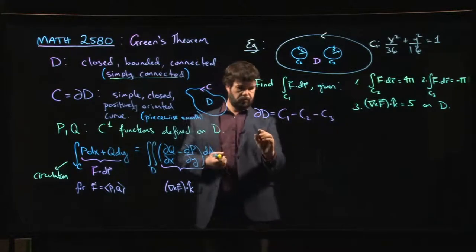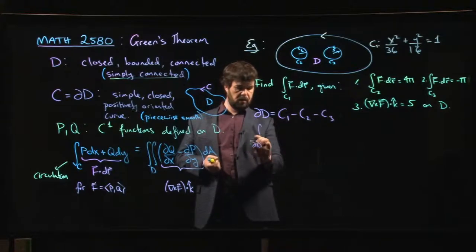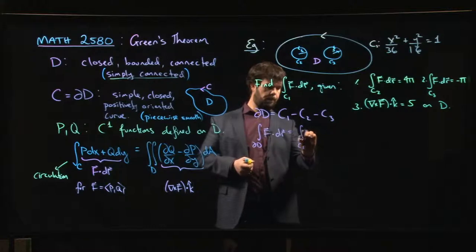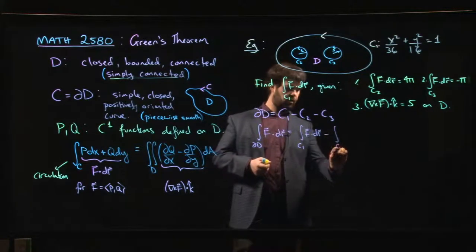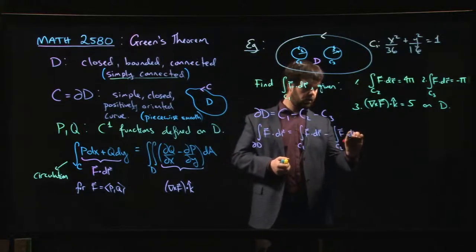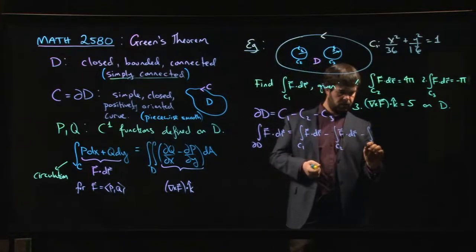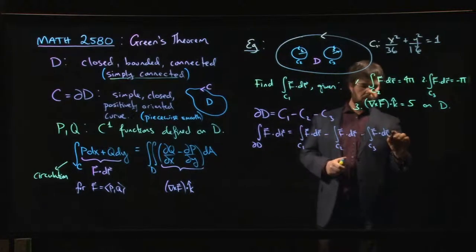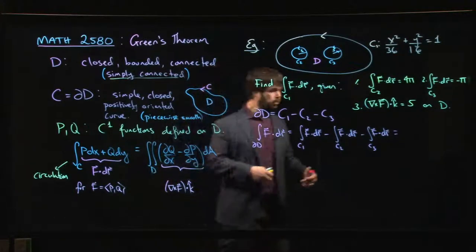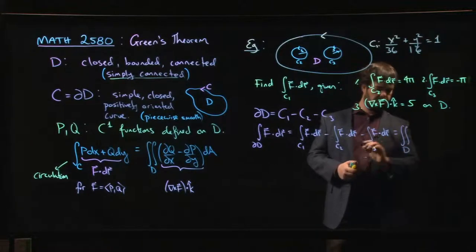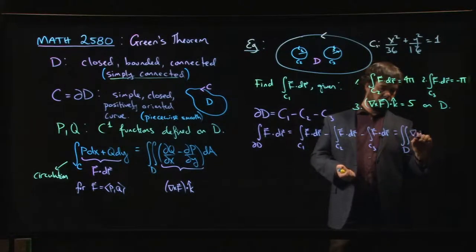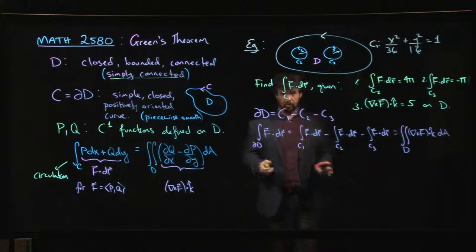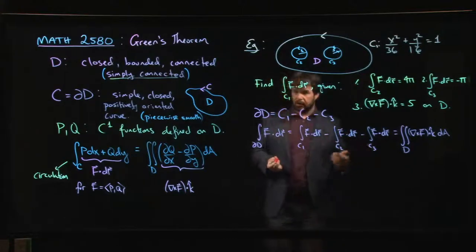So what I know is the integral over the boundary of D of F dot dr, on the one hand, it's the integral over C1 of F dot dr, minus the integral around C2 of F dot dr, minus the integral around C3 of F dot dr. On the other hand, I know from Green's theorem, using the vector notation, I can write it as the double integral over D of the curl of F, this sort of scalar curl, dot k dA. That's what Green's theorem gives me.